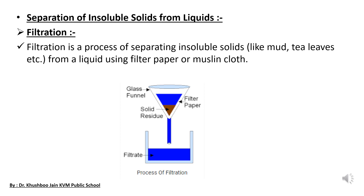The first method of separating insoluble solids from liquid is the filtration method. Filtration is the process of separating insoluble solids from a liquid using filter paper or a muslin cloth. Muslin cloth is a very fine cloth in which very fine pores are present.